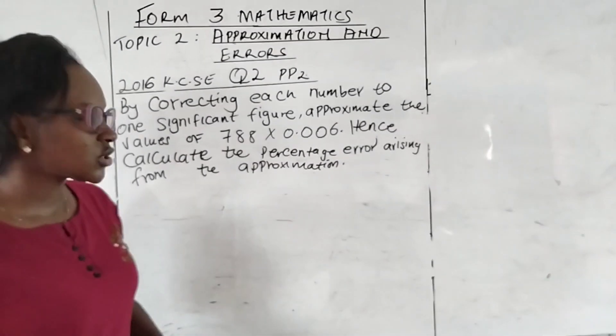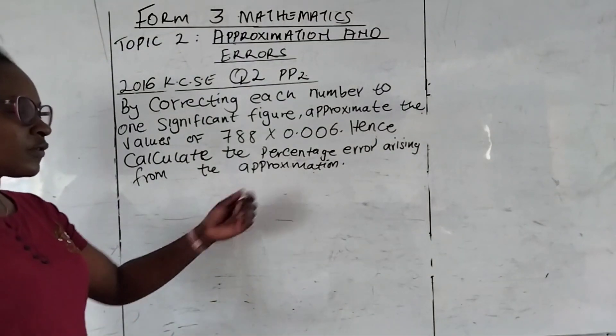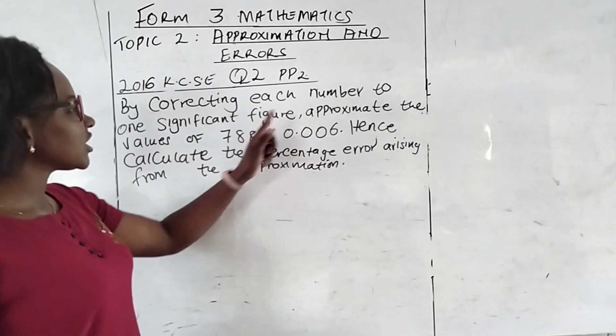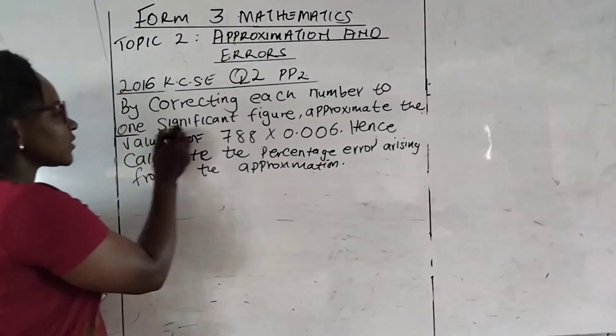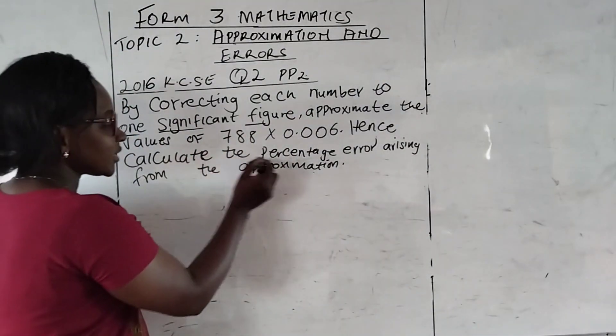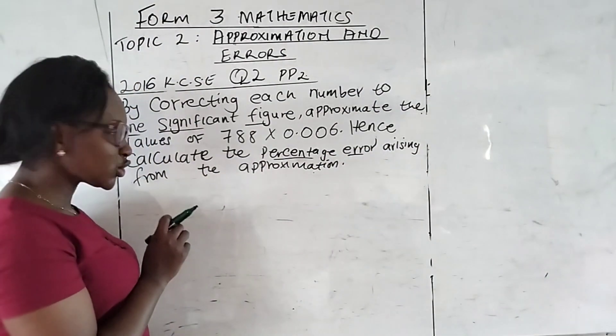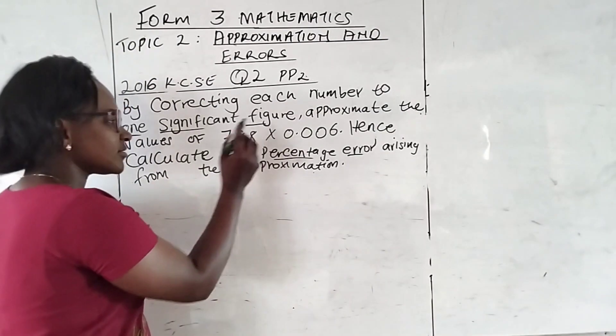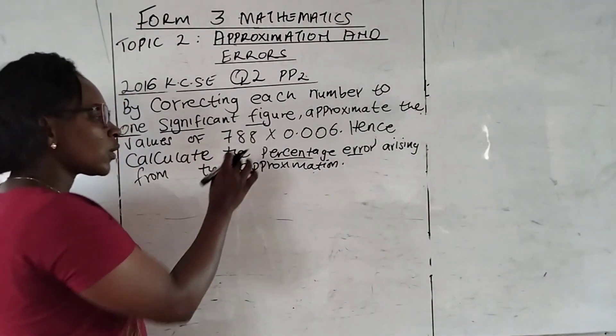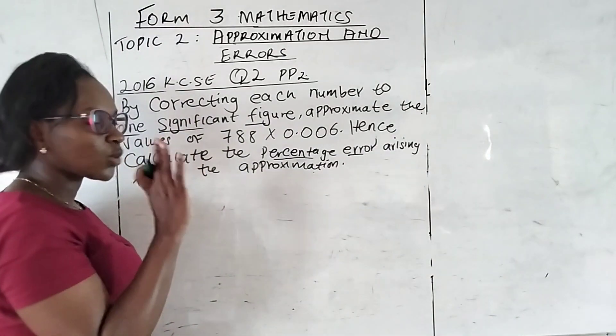This is a very simple question and I would like you to follow to understand. Before we solve this question, we are talking about correcting each number to one significant figure. Here we have 788 and we have 0.006. What is 788 correct to one significant figure?